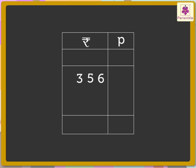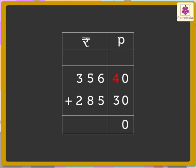Let us add 356 rupees and 40 paise and 285 rupees and 30 paise. First, add the paise: 0 plus 0 is equal to 0, and 4 plus 3 is equal to 7. Now let us add the rupees: 6 plus 5 is equal to 11. Carry 1 above the number 5. Write 1 in the answer, that is, in the units place.